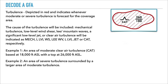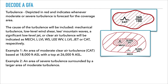In the next example we have two areas of different turbulence intensities. In the middle circle we have severe mechanical turbulence from the surface to 3,000 feet above ground level, and in the outer area we have moderate mechanical turbulence from the surface to 4,000 feet above ground level.